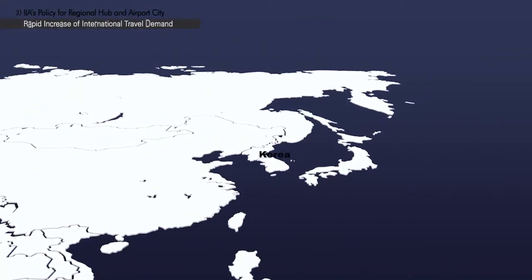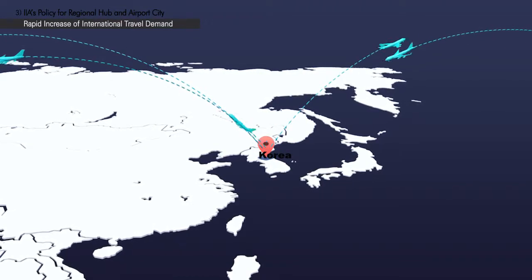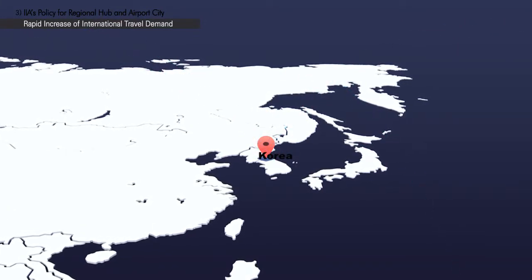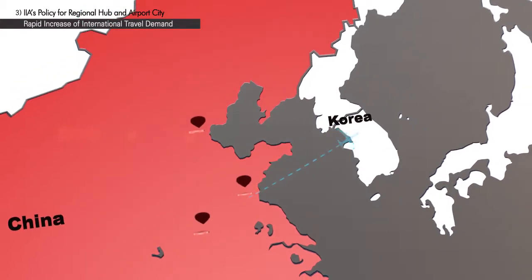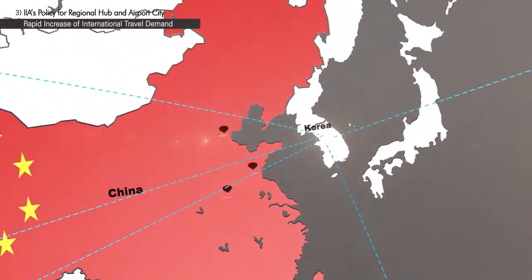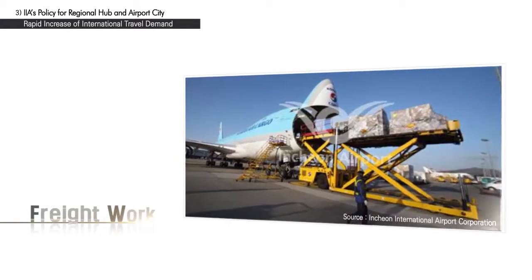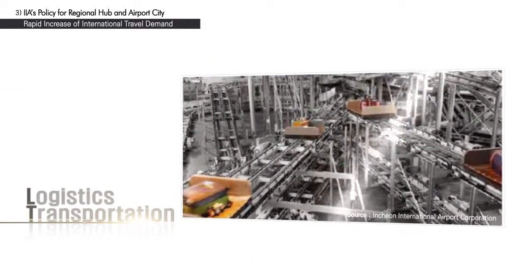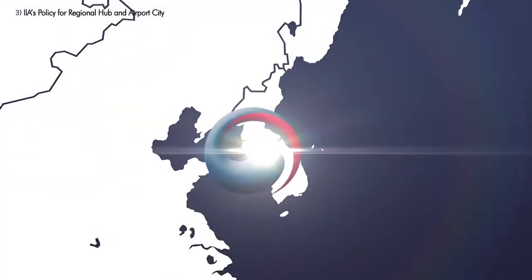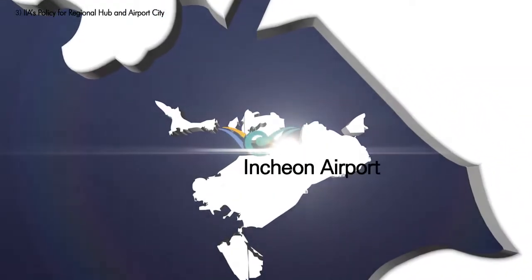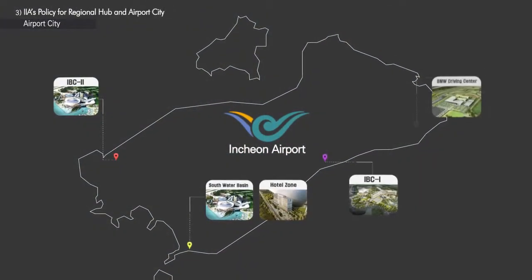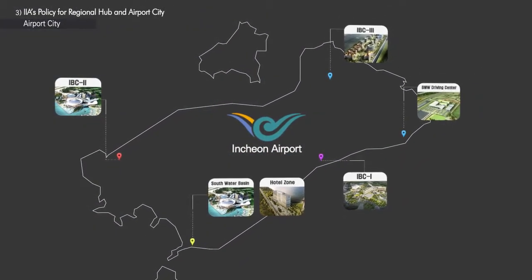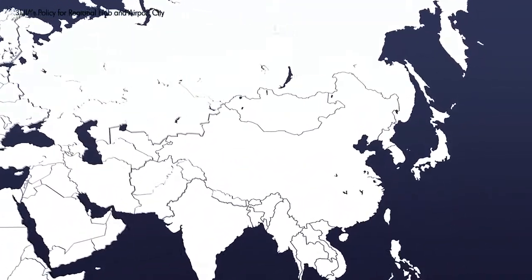The northeastern Asia region, where Korea is located, is currently showing rapid increase in international travel demand. The volume of Chinese travelers is showing explosive increase using Incheon International Airport both as a destination airport and a transfer hub. In addition to processing air passengers, Incheon International Airport can also take the role of a logistics center, handling originated destined cargo and transfer cargo. Accordingly, the Korean government emphasized strategies to develop Incheon International Airport as a mega-hub airport of Northeast Asia and to develop the area around Incheon International Airport into an airport city.